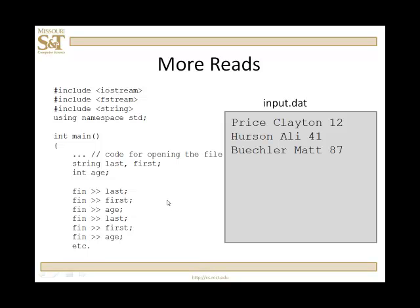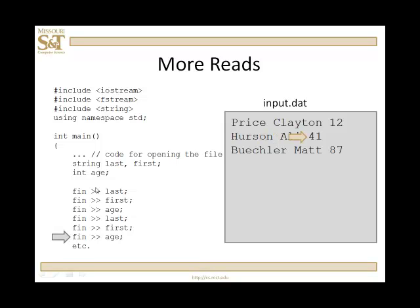Let's take a look at some more examples of reading from a file. Suppose the format is last name, first name, and then age. If I know it's always in that order, I can read it in using the extraction operator — reading into last (a string), first (a string), and age. I'm depending on the names being complete words, contiguous strings of characters. If I had a first name with a space in it, that won't work right and I'd need to use the getline function.